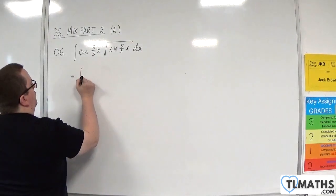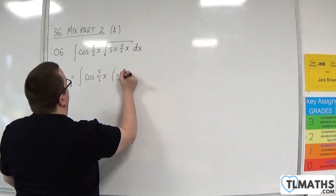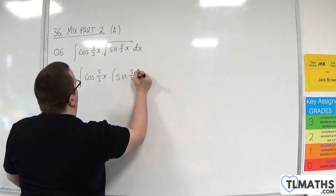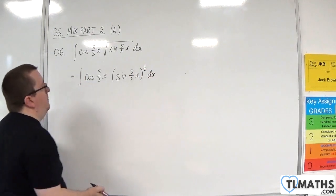So we have the integral of cosine of 5 thirds x. And I'm going to rewrite this as sine of 5 thirds x to the half dx. Now, you might be asking, how do I know that substitution is going to work here and that I could reverse the chain rule?